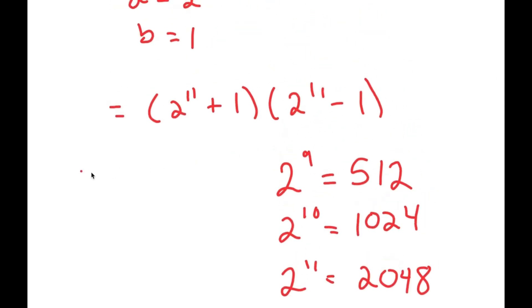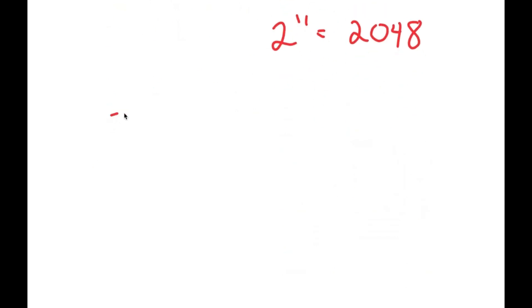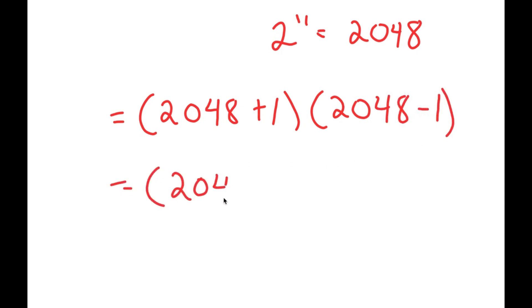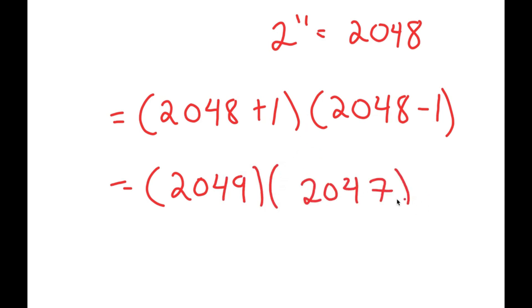So now I get 2048 plus 1 times 2048 minus 1. Now, 2048 plus 1 is 2049 and 2048 minus 1 is 2047, so I get 2049 times 2047.